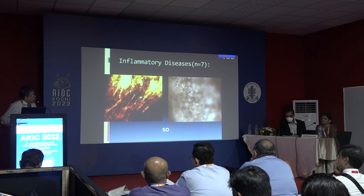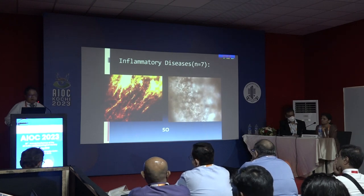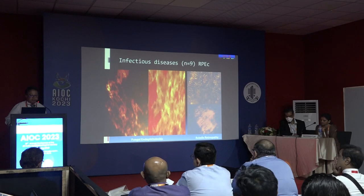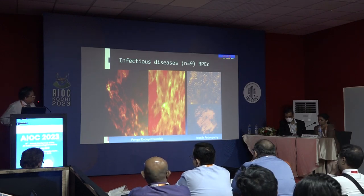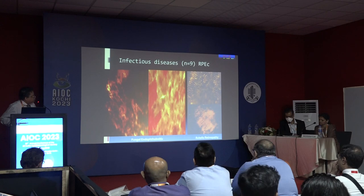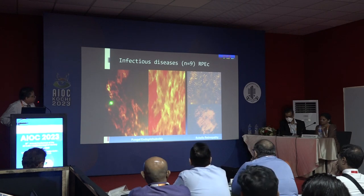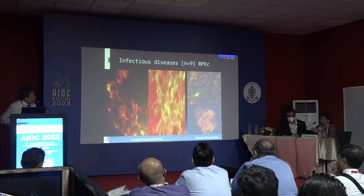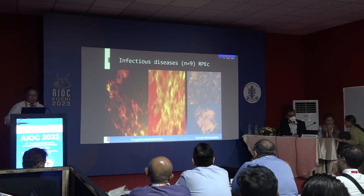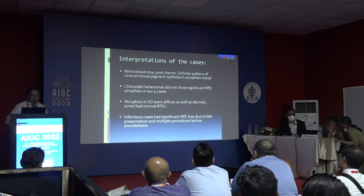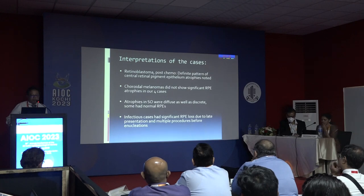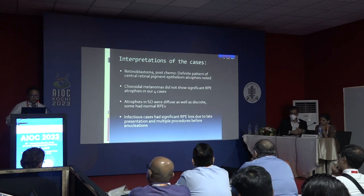In inflammatory cases, particularly sympathetic ophthalmia, there was diffuse as well as discrete RPE changes, and some areas showed normal RPE. In infectious pathology, fungal endophthalmitis showed very severe RPE changes with hemorrhage, which were also diffuse. In rubella retinopathy, both normal and atrophic areas were seen.